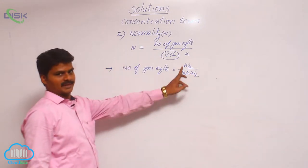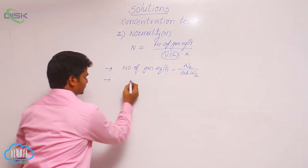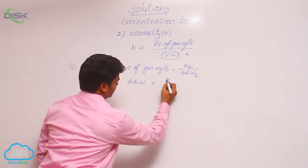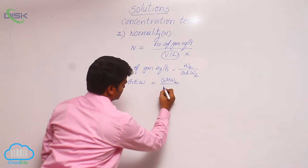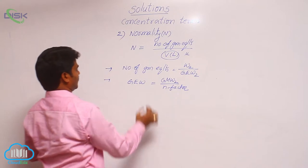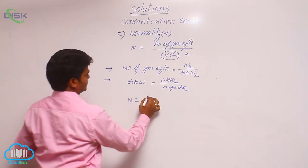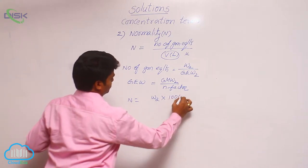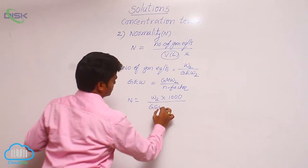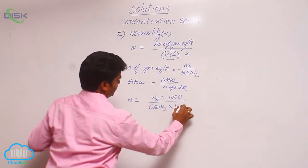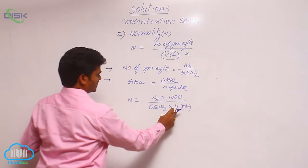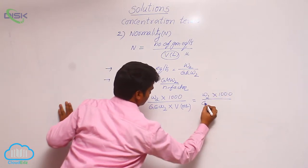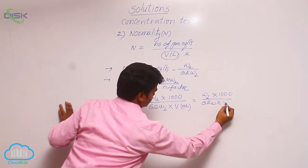Gram equivalent weight is equal to molecular weight of solute divided by its N-factor. Finally, the normality formula can be written as W2 × 1000 divided by gram equivalent weight × volume in mL. If volume is given in liters, then the formula is W2 divided by gram equivalent weight × volume in liters.